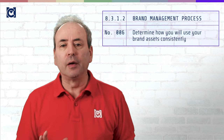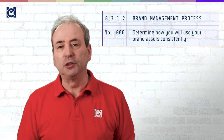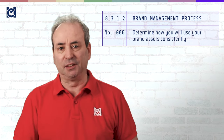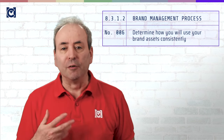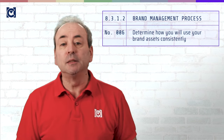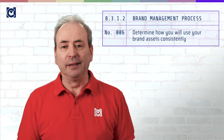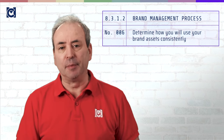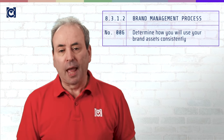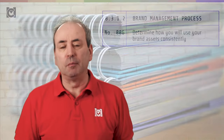Sixth you need to include in your plan how you are going to ensure that you use your brand assets consistently. This will include physical spaces but also online and in the behaviors that people exhibit. A part of this will be a style manual which will show how people will use your brand assets in things like written communication, adverts and promotional materials.